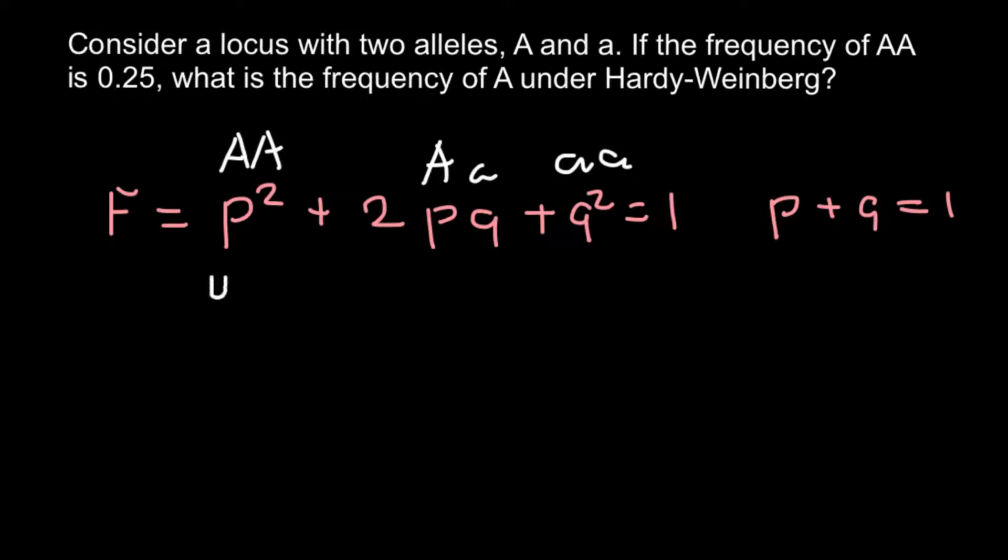Everything we have to do is take the square root of p². So we basically have to take the square root of 0.25, and p would equal 0.5. So this is going to be our answer.